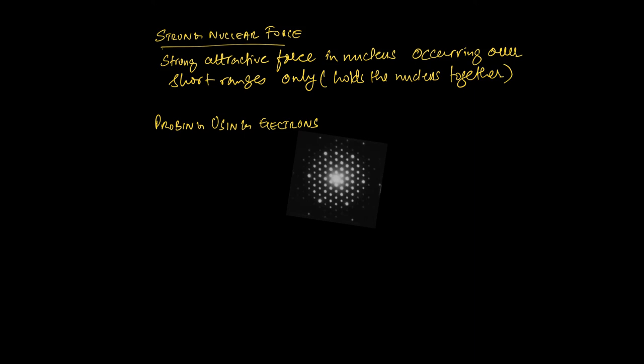If you increase the energy of the electron beam, the wavelength is going to decrease. Eventually, the electron wavelength might be of the same order of magnitude as the diameter of the nucleus, and when you then probe the nucleus with high-energy electrons rather than alpha particles, that is going to give you further insight into the dimensions of the nucleus and also gives you information about the distribution of the charge in the nucleus itself.